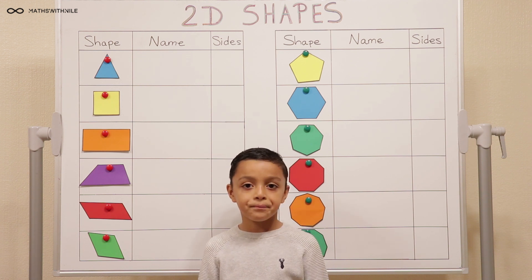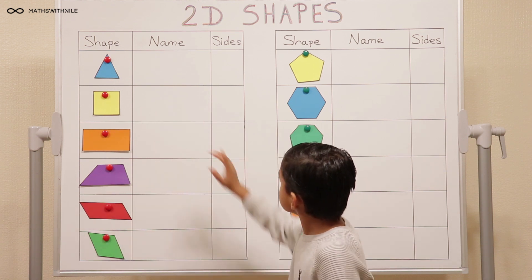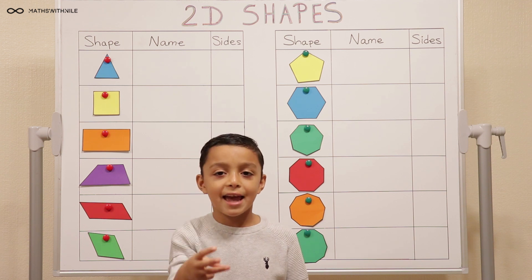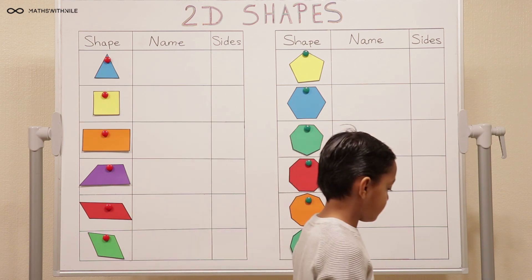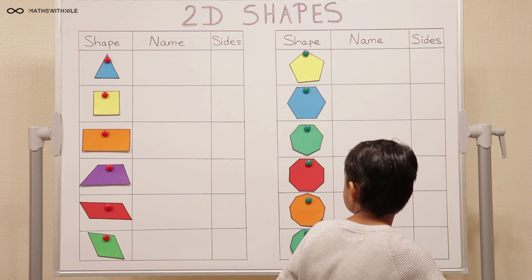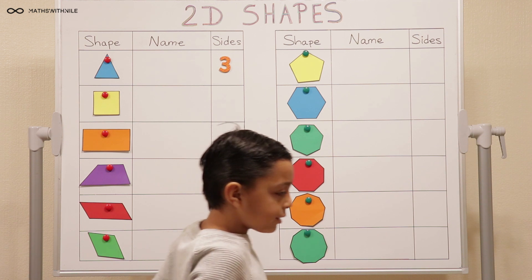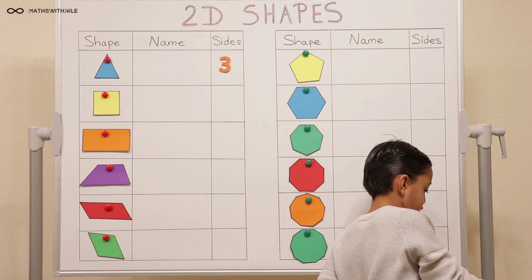Hi Niall, you have some 2D shapes behind you. Shall we start with the first one on top? How many sides does that shape have? Three, and it's called a triangle. Great, so can you get the number of sides and the name to match that shape? Three sides, it's a triangle.